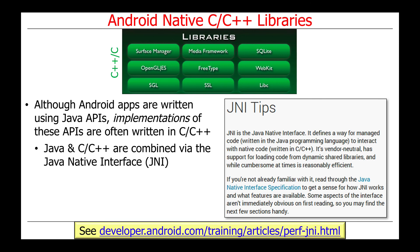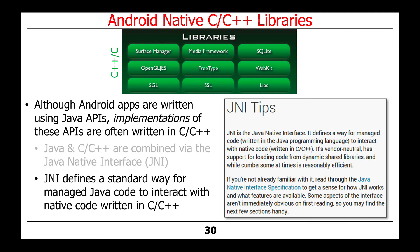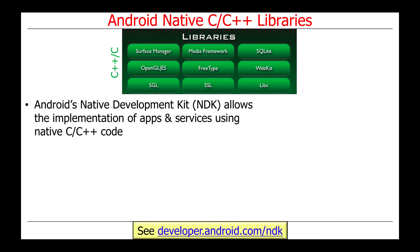You can interact between these different layers using the Java Native Interface, or JNI, which defines a way for managed code written in Java to interact with native code written in C/C++. This is available out of the box with the Java platform and provides a standard way for managed code to interact with native code. If you want to program even more of your app using native code, there's the Android Native Development Kit, or NDK, which allows developers to implement larger portions of their apps using native C/C++ code.